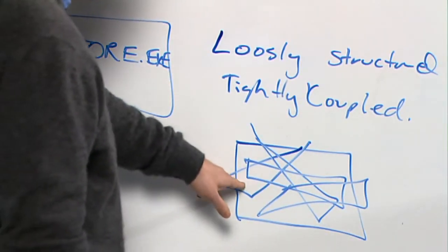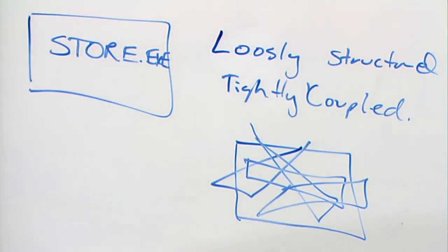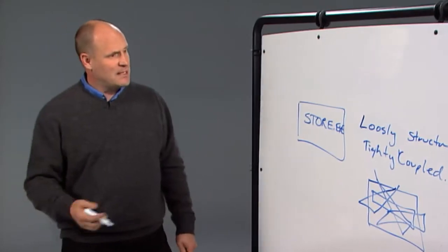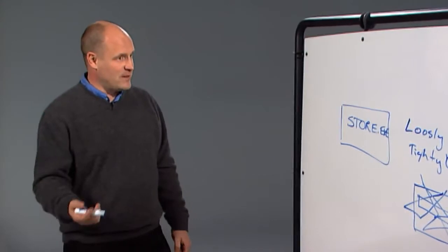Tightly coupled meant that you change something here, it would have permanent effects over here and unexpected behaviors. It was beginning to be difficult to innovate and make changes in our system. We really needed to think about how we'd fix that.